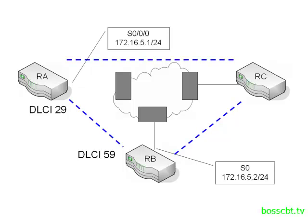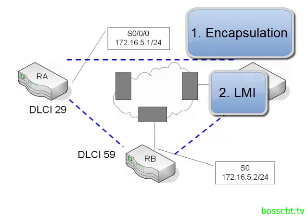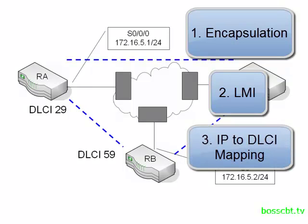Frame relay configuration can be a little bit confusing, so remember three steps to get frame relay up and running. The first is to define your encapsulation — frame relay is a layer two protocol, so you have to state that you want to use frame relay as your encapsulation. The second is LMI configuration, ensuring the router and the frame relay switch use the same LMI type. The third and final step is to configure the mapping between the IP address and the DLCI. Keep those in mind and you'll be okay when you need to troubleshoot and configure frame relay.